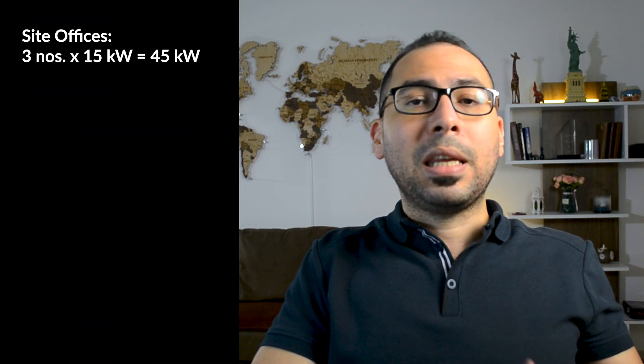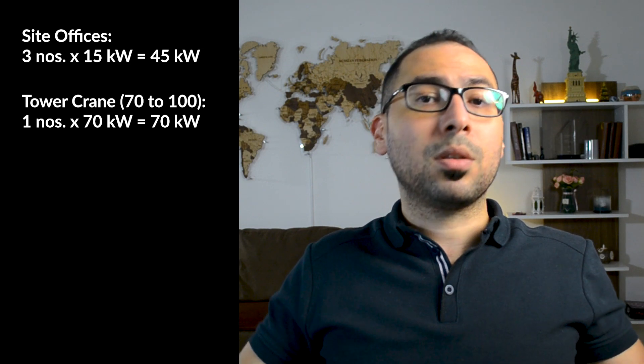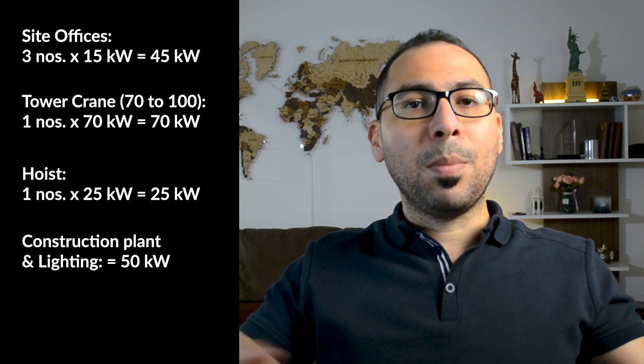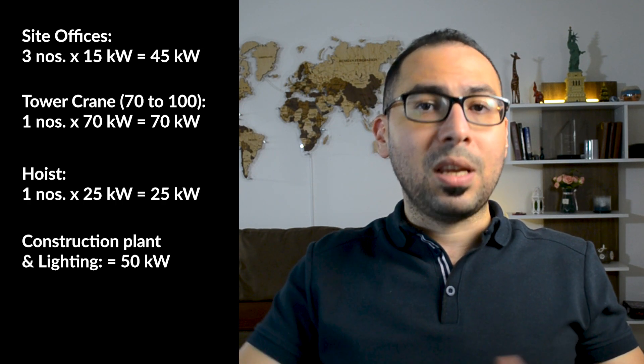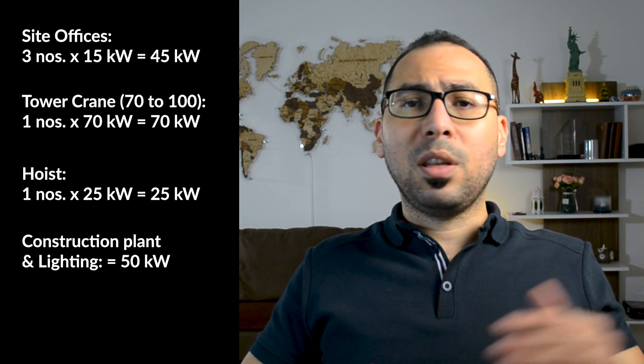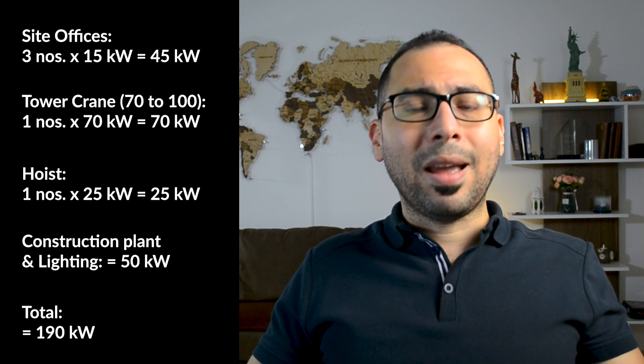For example, one porta cabin site office with two AC units, six or seven lighting points, and five or six power points might require 15 kilowatts. Three porta cabins would be 45 kilowatts. A tower crane might require 75 kilowatts, a hoist around 20 to 25 kilowatts, and construction plant and tools perhaps 50 kilowatts more. So the total power requirements come to around 190 kilowatts.